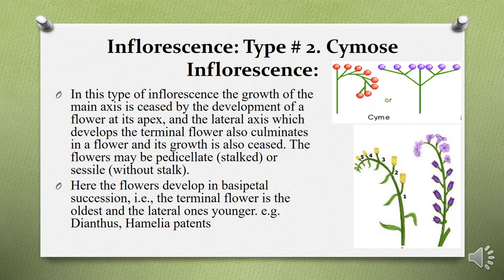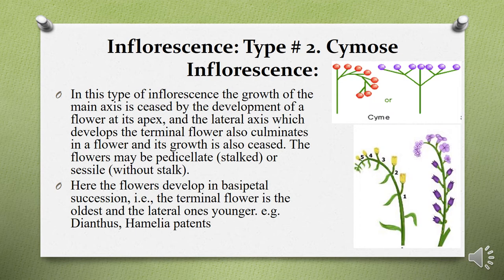In monocasial cymose inflorescence, lateral axes arise on only one side of the main axis, and the growth of each axis ceases after development of a flower at its tip. In dicasial cymose inflorescence, lateral axes arise from both sides of the main axis. In polycasial cymose inflorescence, multiple branches arise from the main axis, and every axis stops growing after development of a terminal flower at its tip.